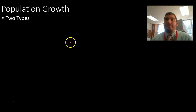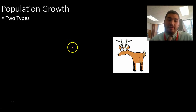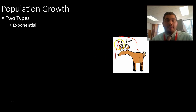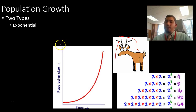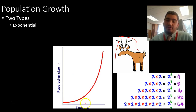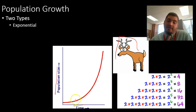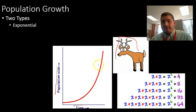There are two types of population growth, and this is where it gets a little mathy. The first type is exponential. If you've ever heard of an exponential equation, it's one that looks like a J-curve — it starts out slow. On the x-axis we have time, on the y-axis we have the number of organisms or the population size. In the beginning, the rate of population growth is pretty slow, but then at a certain point it starts increasing exponentially until it's almost climbing straight up.